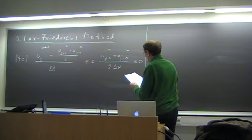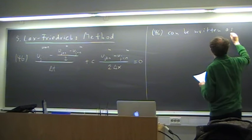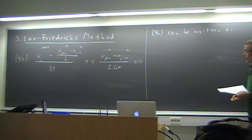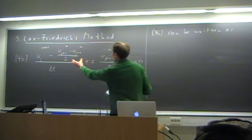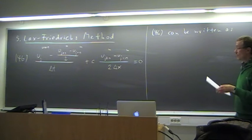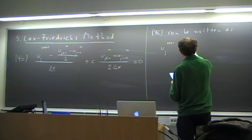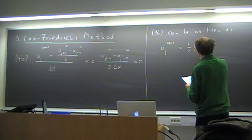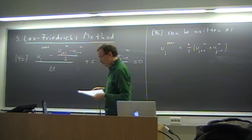Now we want to write this in the form as we would code it. If we simply multiply by Δt, we will see that we get c·Δt divided by Δx times one half, which gives us the Courant number. We also bring terms to the right-hand side and see that they operate on the same values.